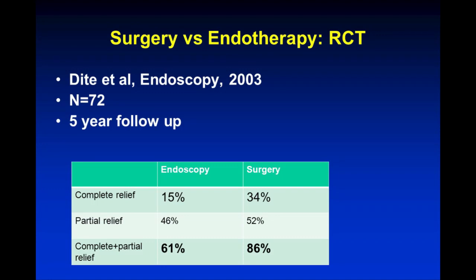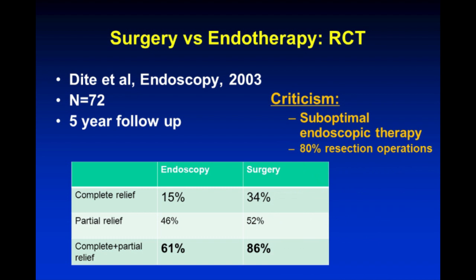The first randomized controlled trial in 2003 included 72 patients with five-year follow-up. In general, the surgery group did better, but this was criticized because the endoscopic group was somewhat suboptimal — about half received sphincterotomy only, which is probably not adequate. Additionally, the surgery group was approximately 80% resection operations as opposed to drainage operations, which is more the current approach.